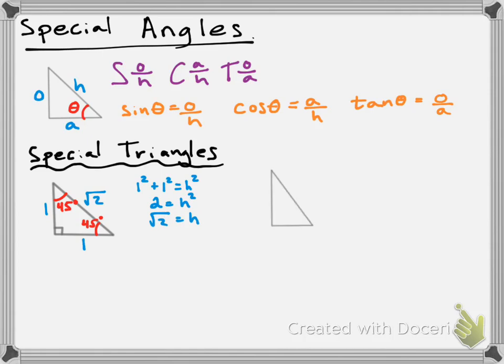Our second special triangle is essentially going to be half of an equilateral triangle. If I take the blue part and the gray part together, that gives me one big equilateral triangle. The equilateral triangle has side lengths which are all the same, and it also has angles which are all the same. We're really concerned with the right half of this equilateral triangle — the one in gray.